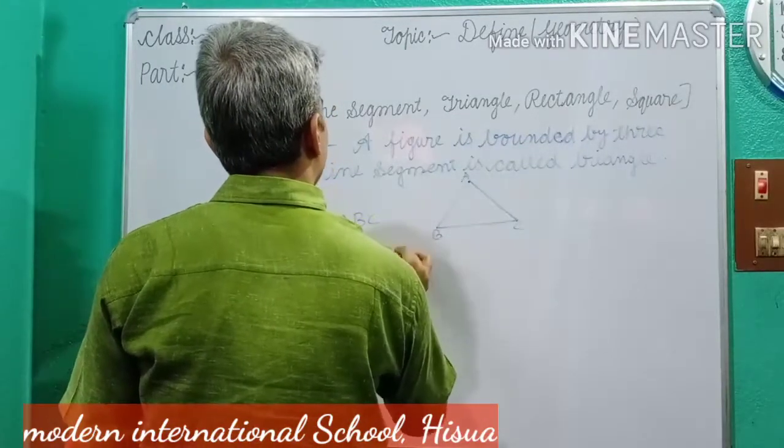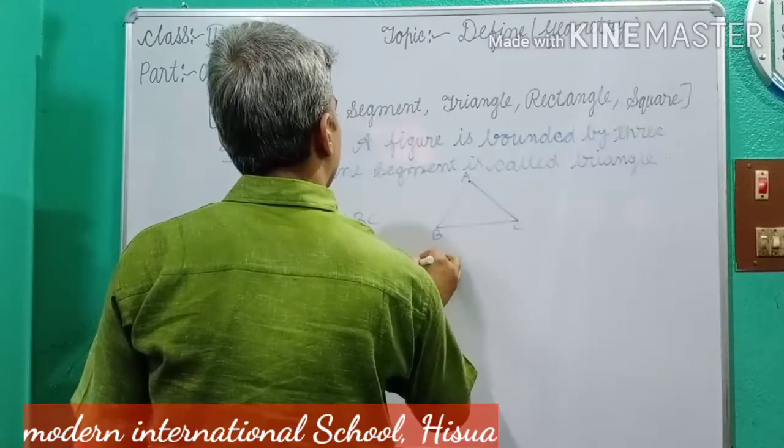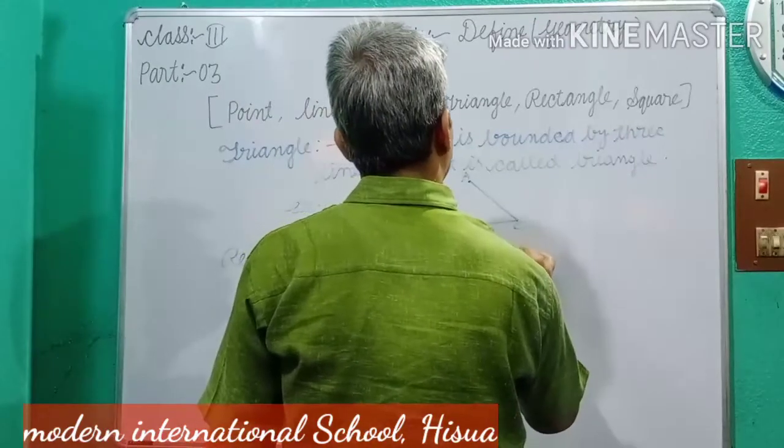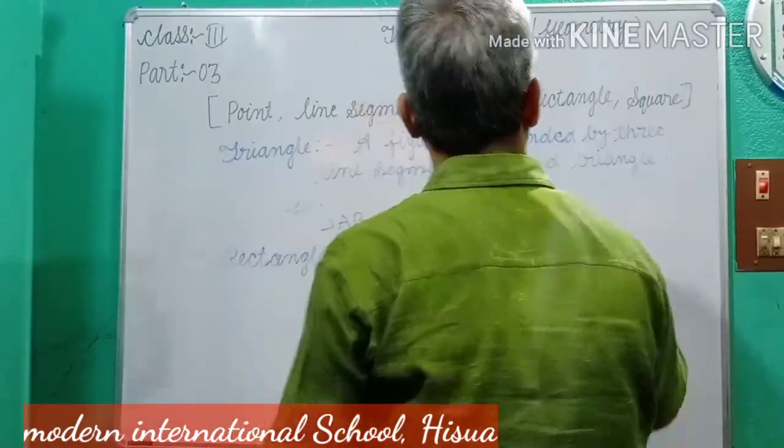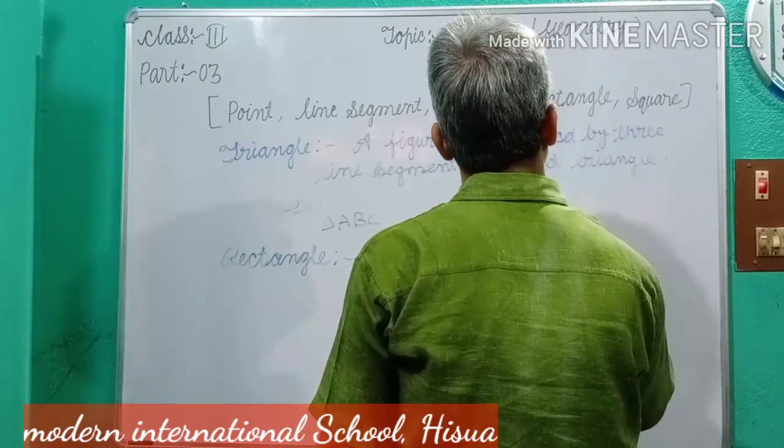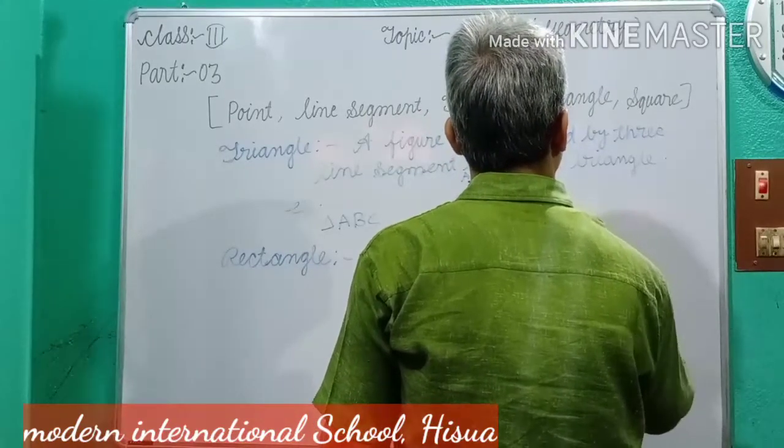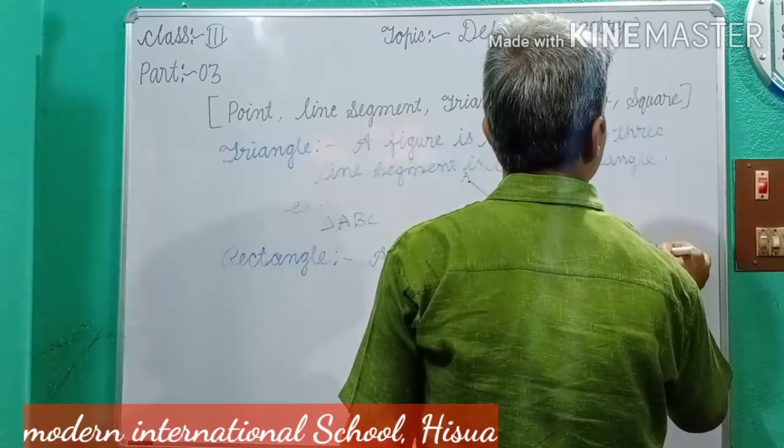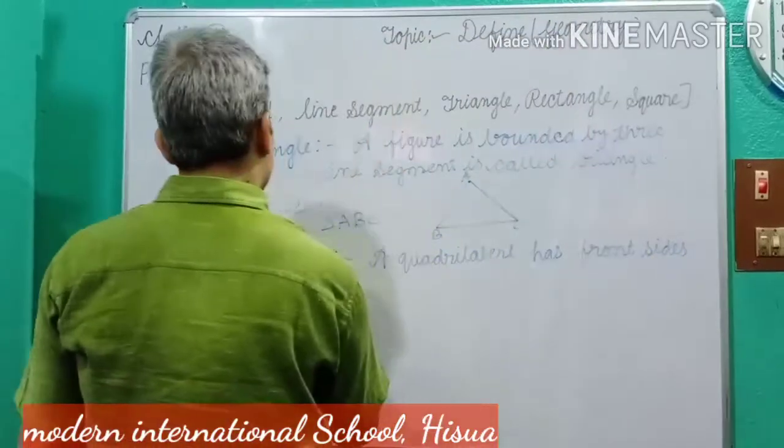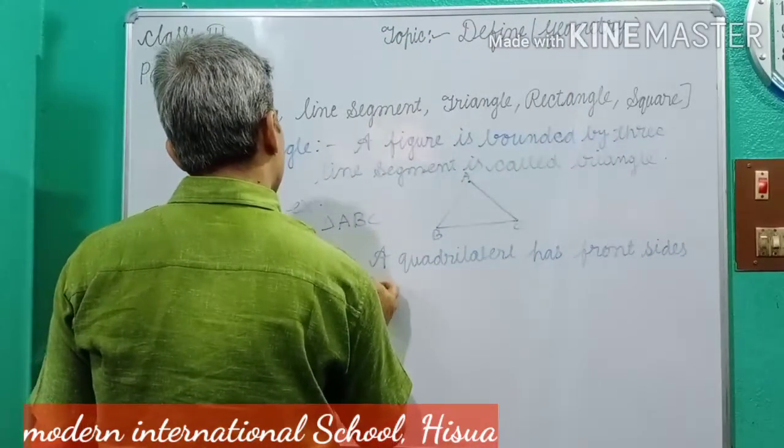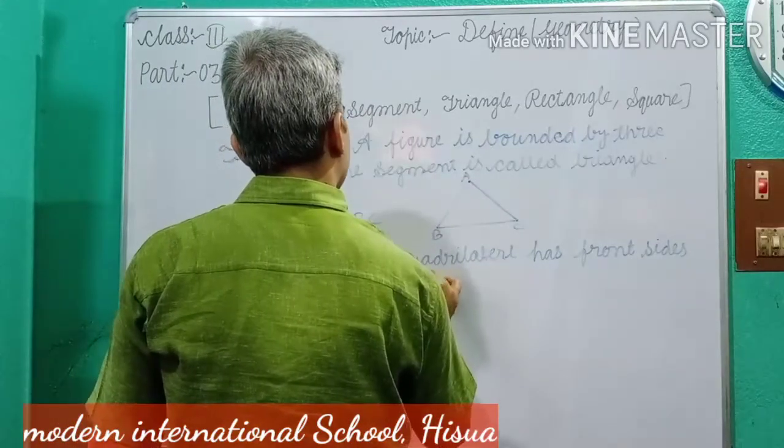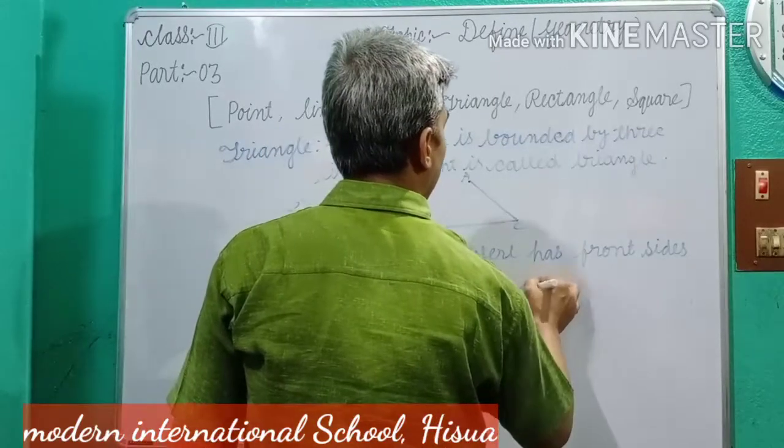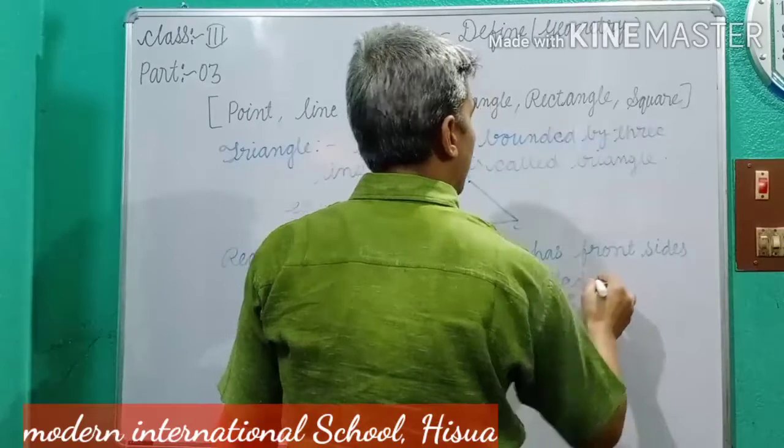A figure, a quadrilateral, has opposite sides equal is called rectangle.